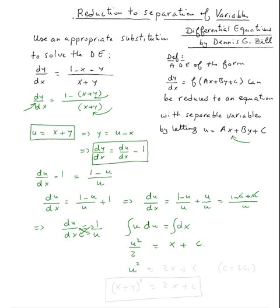Multiply by two: u squared equals 2x plus c₁. Now we have to replace u back with x plus y. So (x plus y) squared equals 2x plus c. This is the solution, and that's it for this example.